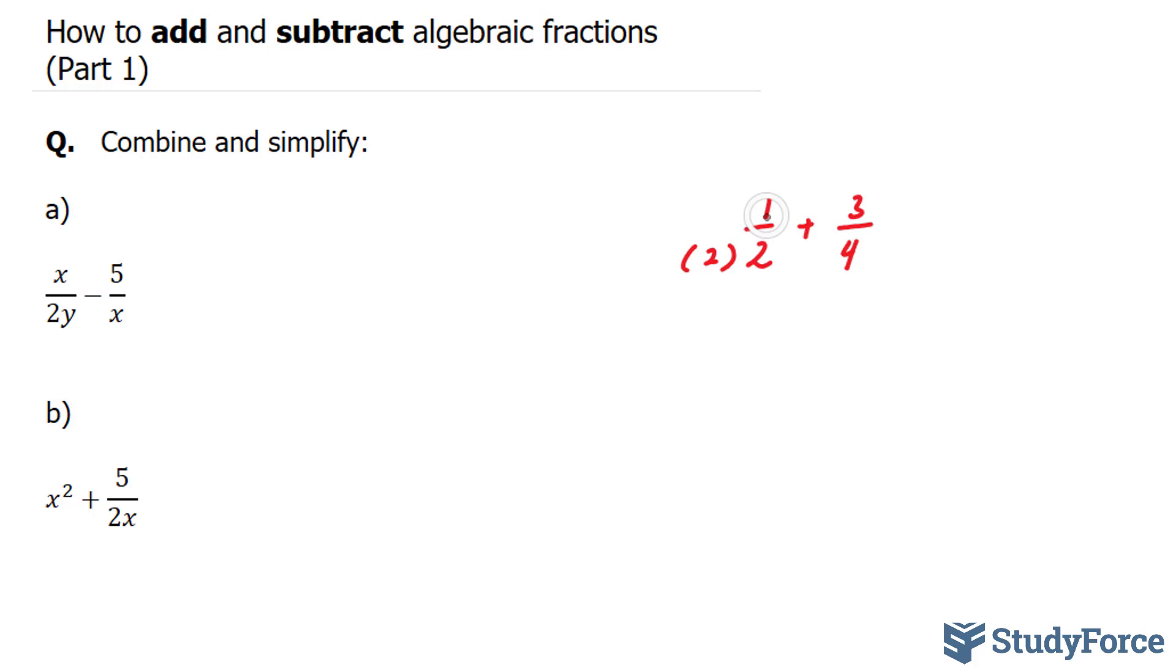And if you do that to the denominator, you have to do it to the numerator. And you end up with 2 over 4 plus 3 over 4. And now you can simply add the numerators, where we end up with 5 over 4. And this is your combined fraction.